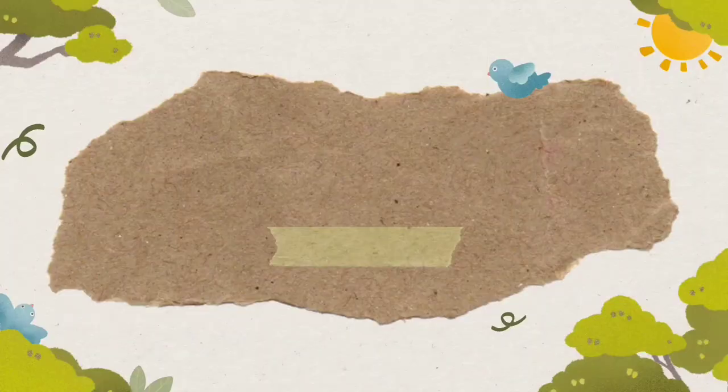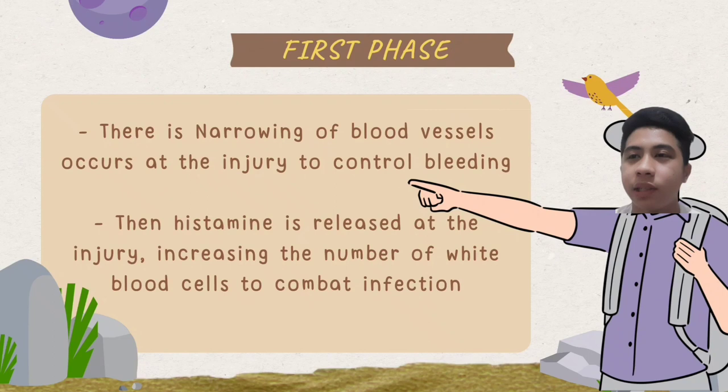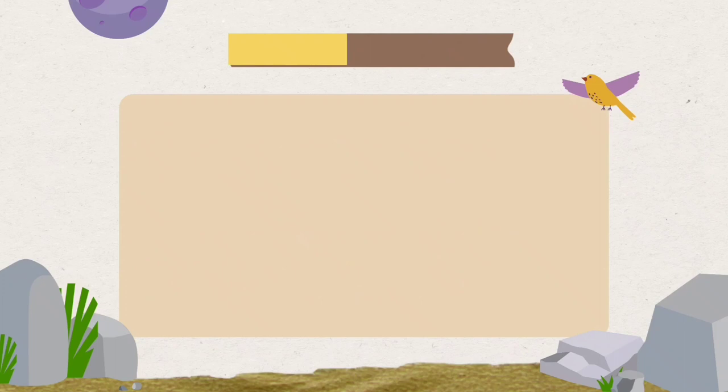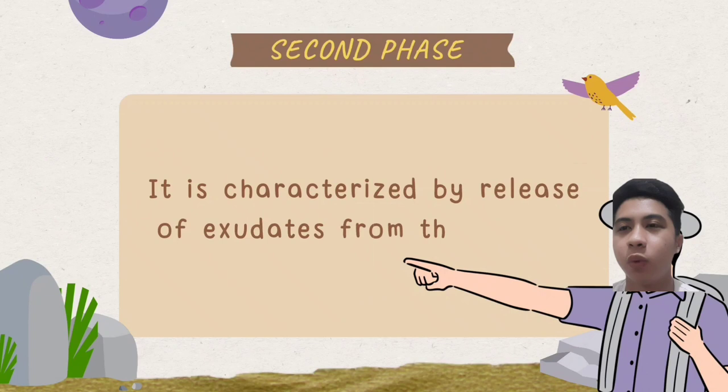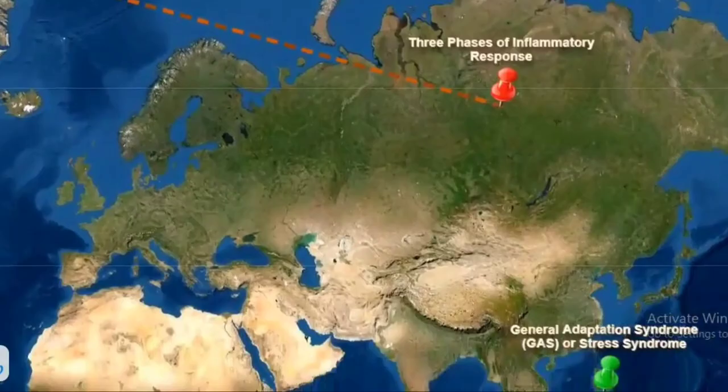Fourth stop: three phases of inflammatory response. In the first phase, there is narrowing of blood vessels at the injury to control bleeding. Then, histamine is released at the injury, increasing the number of white blood cells to combat infection. In the second phase, it is characterized by the release of exudates from the wound. Then, the third or last phase is the repair of tissue by regeneration and scar formation. Regeneration replaces damaged cells with identical or similar cells.